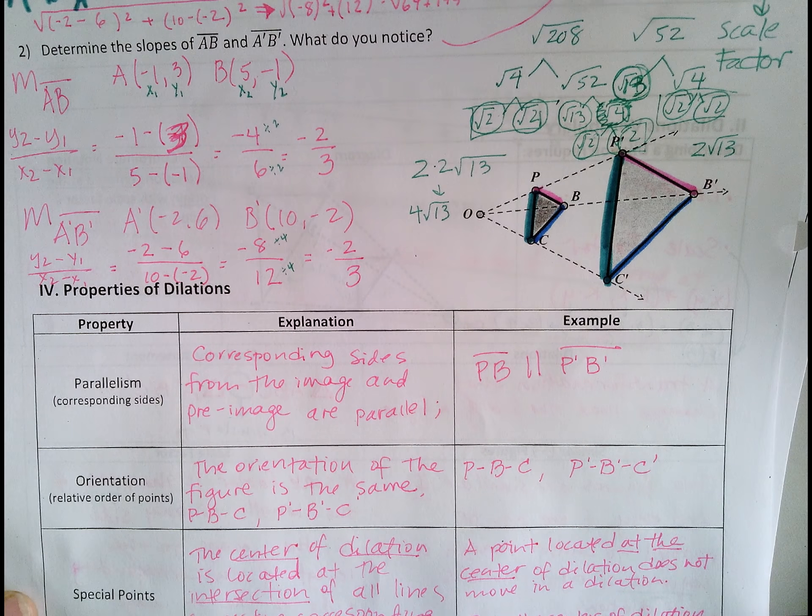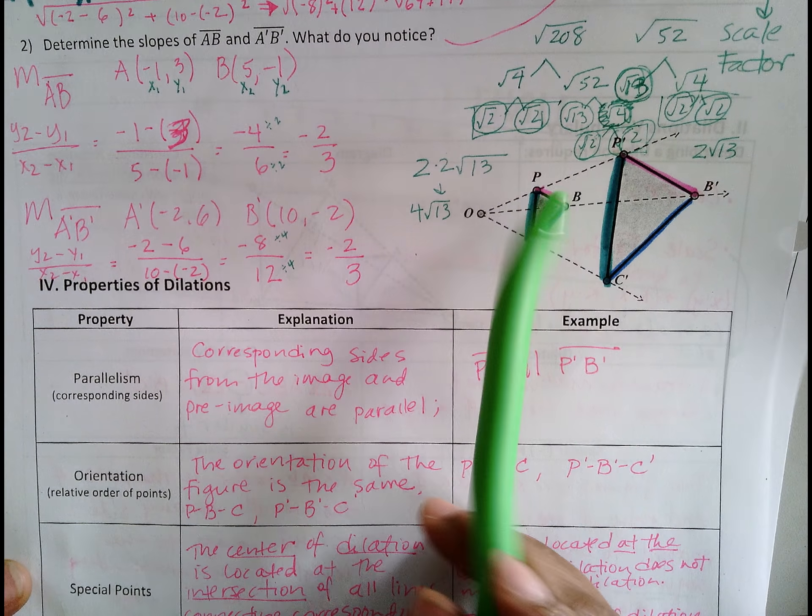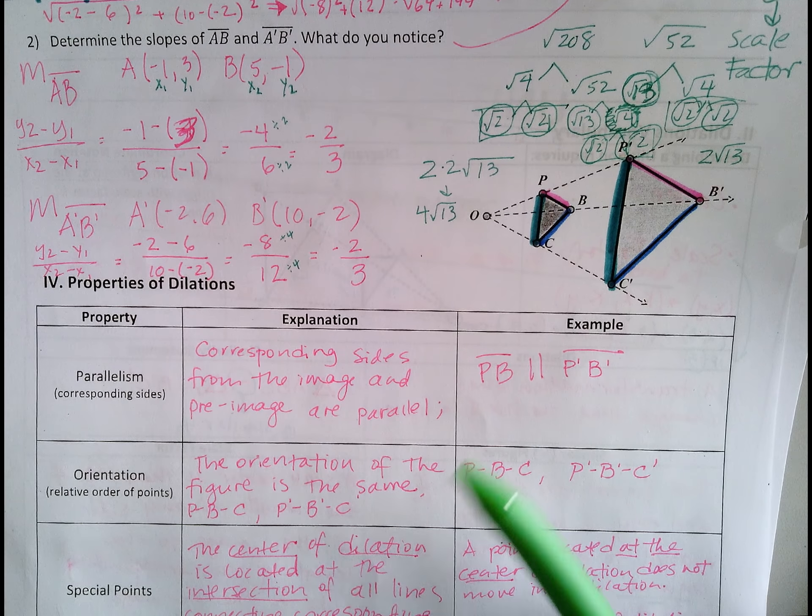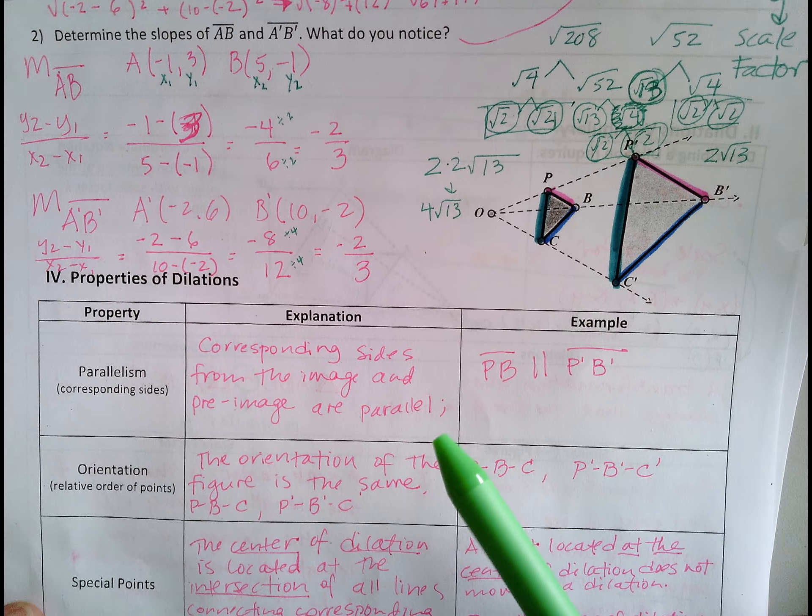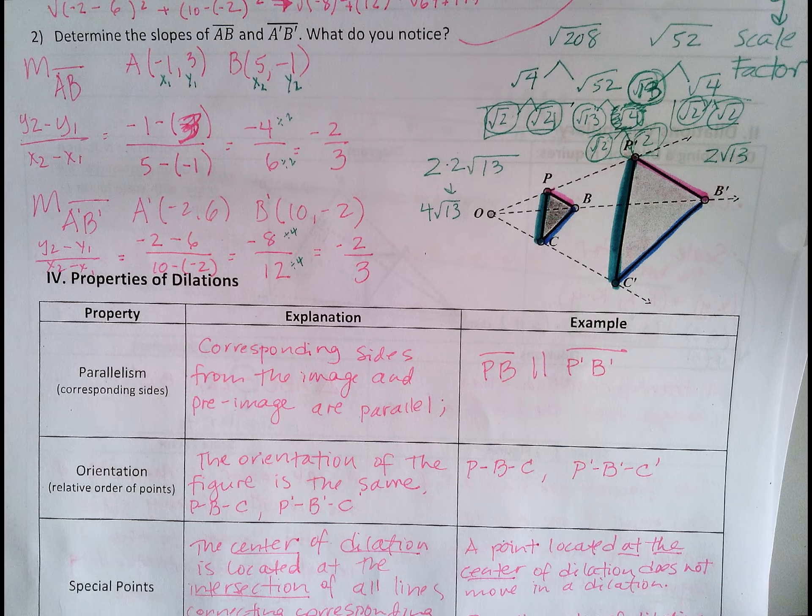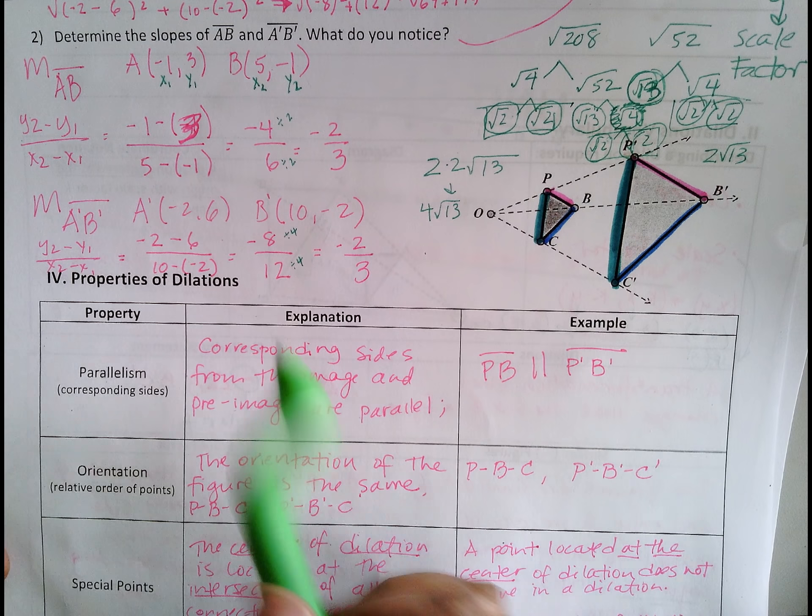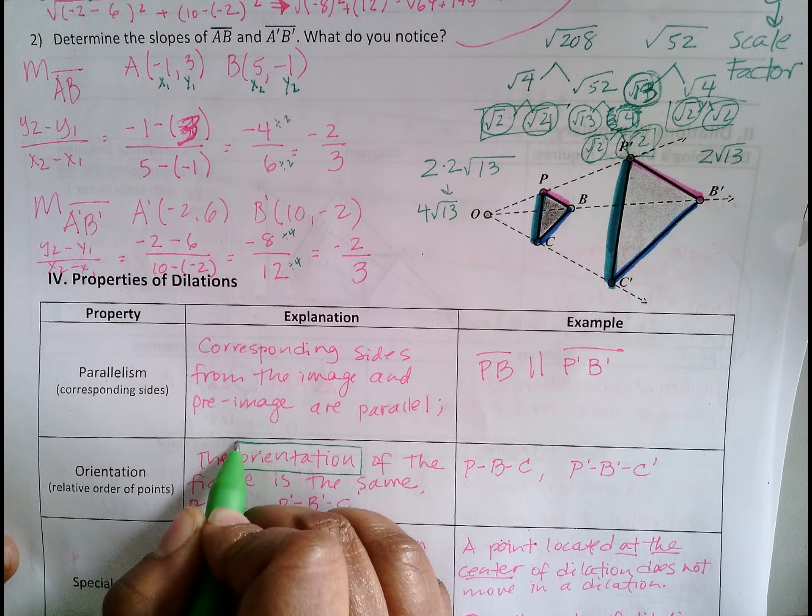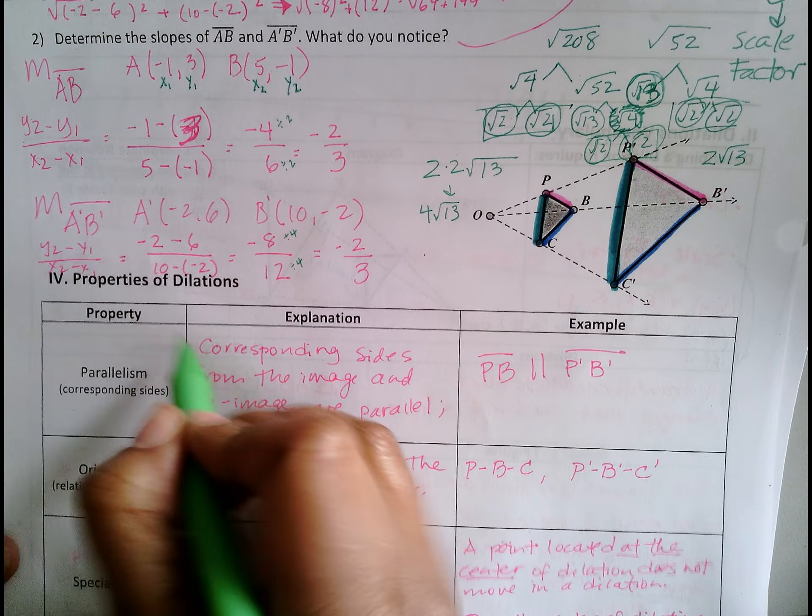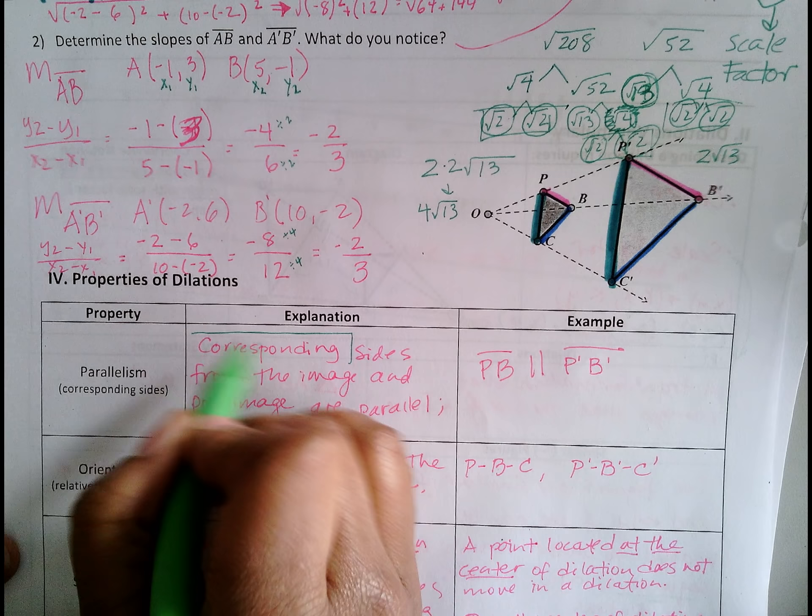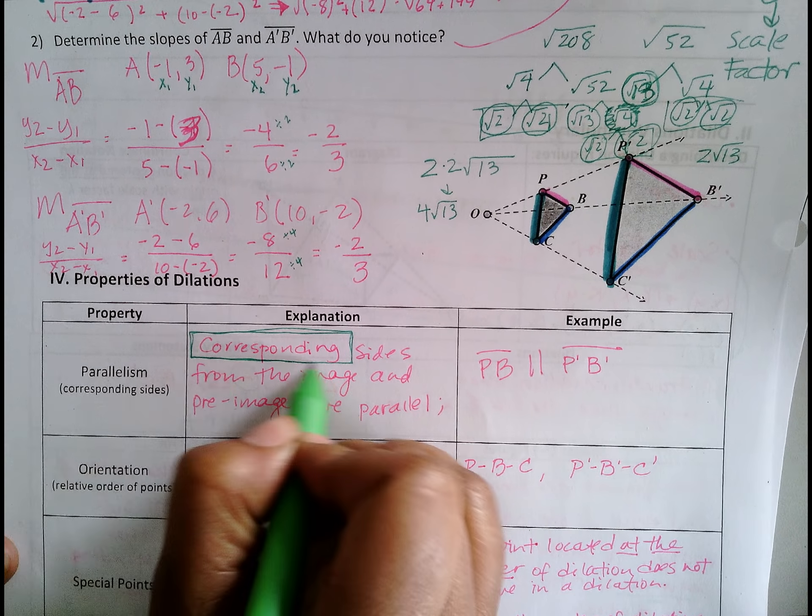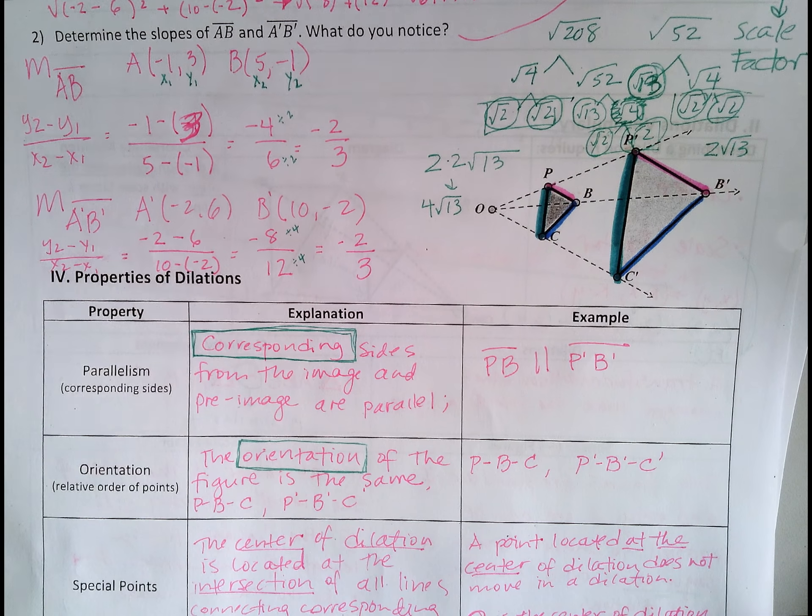Orientation. The orientation, which is the order in which the points go, is going to be the same. So if you dilate a figure, the order of the points is not going to change, or the orientation. This word is important, and you may see it on a vocab quiz. Corresponding is another important one. You may see that on a vocab quiz as well, but I will make sure that we have a quick vocab lesson on that beforehand.